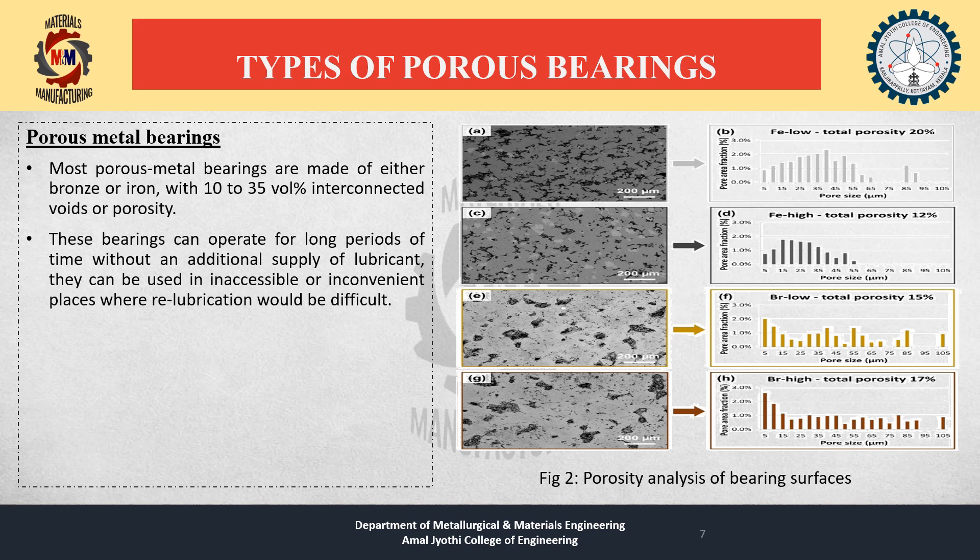Types of porous bearings — Porous metal bearings: Most porous metal bearings are made of either bronze or iron with 10 to 35 volume percentage interconnected voids or porosity. These bearings can operate for long periods of time without an additional supply of lubricant. They can be used in inaccessible or inconvenient places where re-lubrication would be difficult.